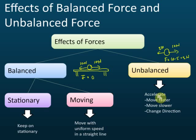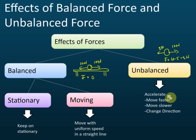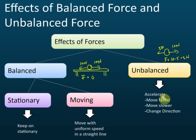Acceleration can mean the object moves faster, moves slower, or moves with the same speed but changes direction. Changing direction is also considered acceleration because acceleration is a vector quantity — it has direction — so when direction changes, the object is considered to be accelerating. In summary: balanced force keeps a stationary object stationary and a moving object moving at uniform speed in a straight line; unbalanced force causes the object to accelerate — moving faster, slower, or changing direction.